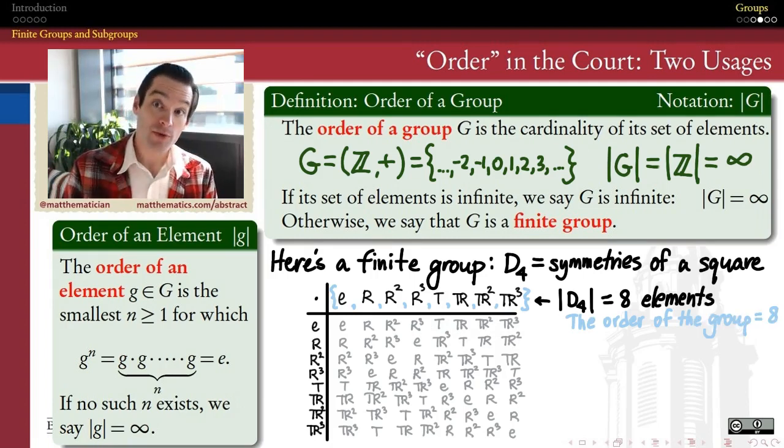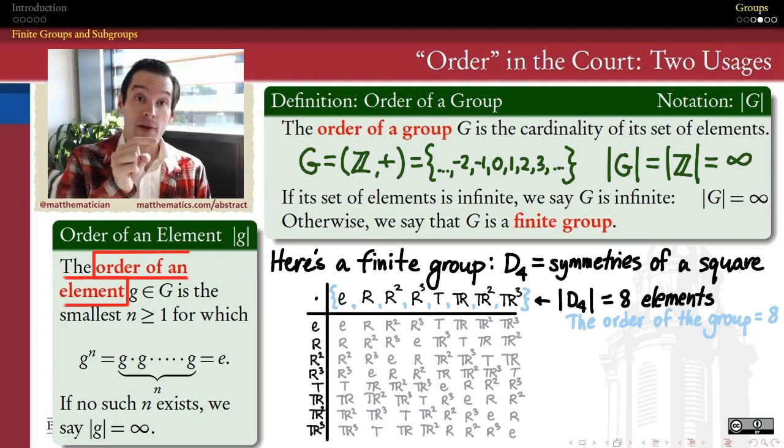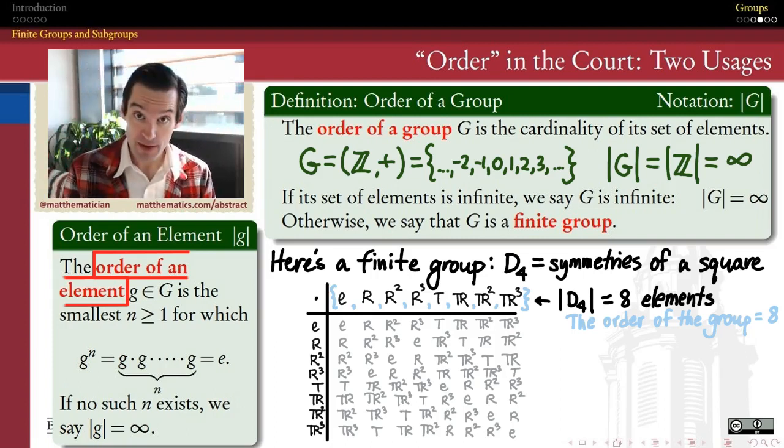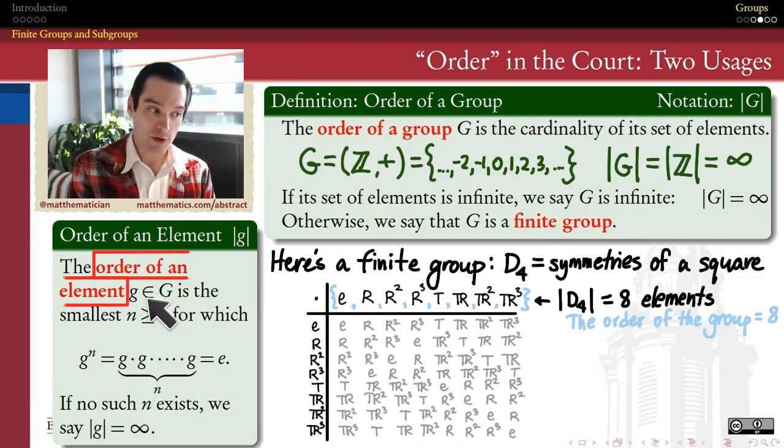But that's only one sense in which we use the word order in abstract algebra. Unfortunately, we've overloaded the word to mean two different things. The other context in which we use the word order is not in speaking about the order of a group, but in speaking of the order of an element within that group. The order of this group over here is 8 because there's 8 elements in the group. But we can also talk about the order of an element.